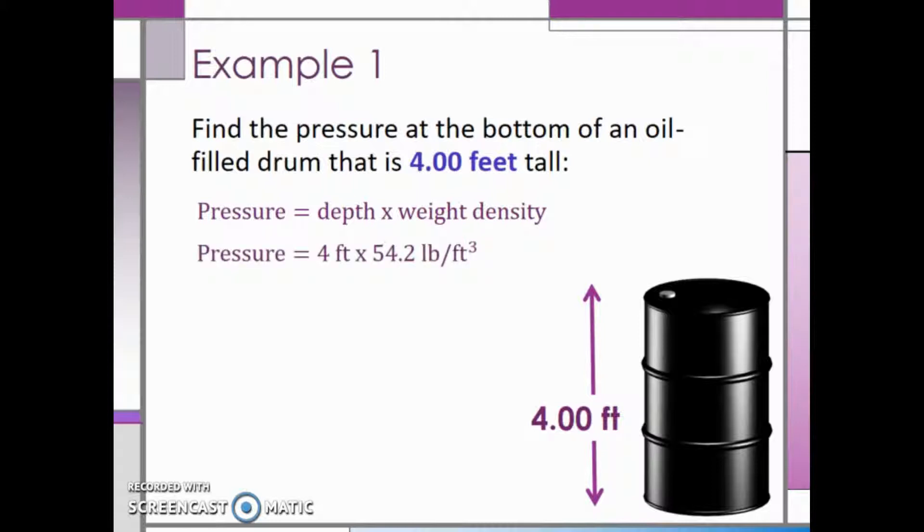Then when we multiply, we have a pressure of 216.8 pounds per square foot. However, we are used to seeing pressure in pounds per square inch, not pounds per square foot. So we are going to convert this into pounds per square inch using the unit conversion process.